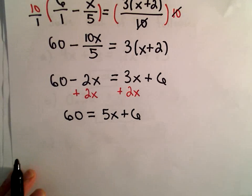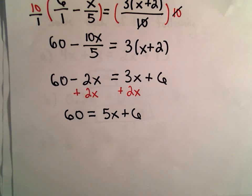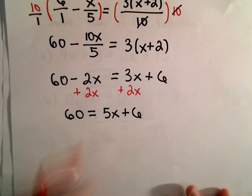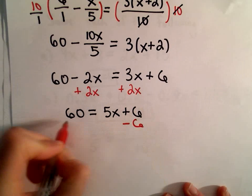But nothing says you have to do it that way. So, 60 equals 5x plus 6. We'll subtract 6 from both sides.